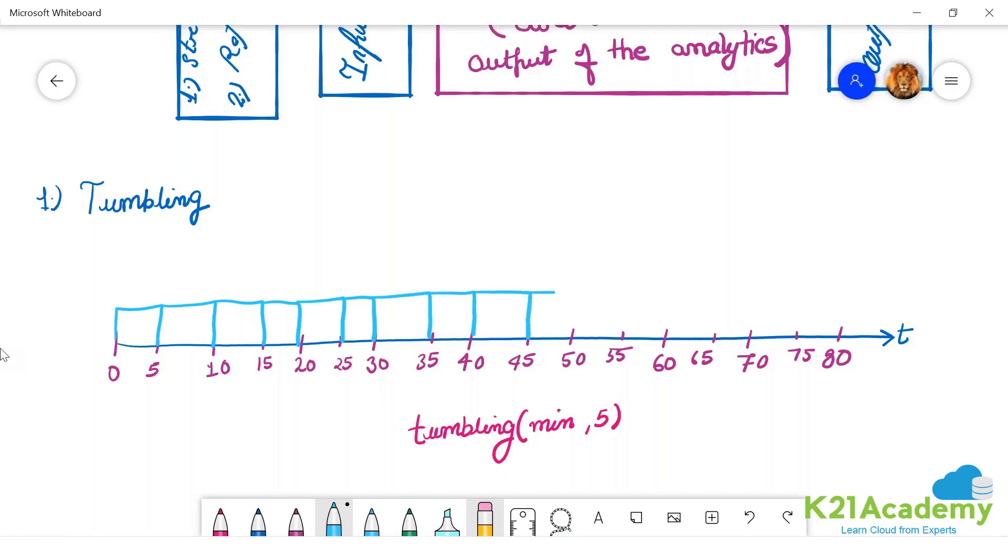This is the tumbling window, but there are certain properties of this tumbling window that you have to remember. This is the window size - 5 minute window size. So this is window 1, window 2, window 3, 4, 5, 6, 7, 8, 9, 10, 11, 12, 13, 14, 15, and 16.